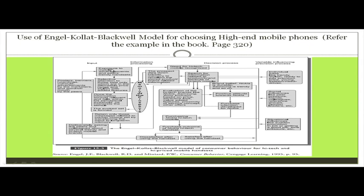In internal search, you try to remember whatever advertisements you were exposed to and whatever your friends and peers are using. If they are not satisfied with this information, or feel it is not enough, they can deliberately ask peers and colleagues, search mass media, consult retailers, or compare product features on online sites. This is external search. Information gathered from external search that is deemed relevant is then included in long-term memory.